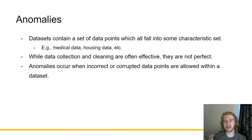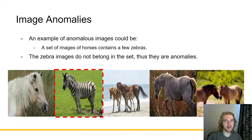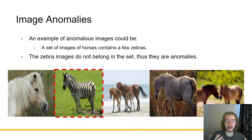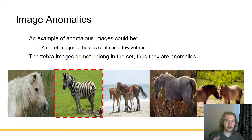While data collection and cleaning are very often effective, they are not always perfect. So anomalies can occur when incorrect or corrupted data points are allowed within a dataset. For example, today we'll be talking about image anomalies. An example of anomalous images could be a set of horses which contains a few zebras. On the bottom there you can see a couple images of horses and there's a zebra. That zebra image does not belong in the set and thus it is an anomaly.